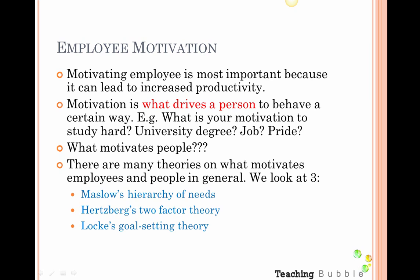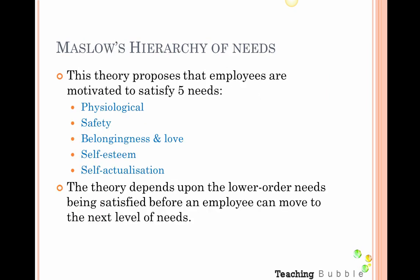The three theories are Maslow's Hierarchy of Needs, Herzberg's Two-Factor Theory, and Locke's Goal-Setting Theory. We're going to look at Maslow's Hierarchy of Needs first. This theory is based around the idea that employees are motivated to satisfy five specific needs: physiological, safety, belongingness and love, self-esteem, and self-actualization — and they work in that order.